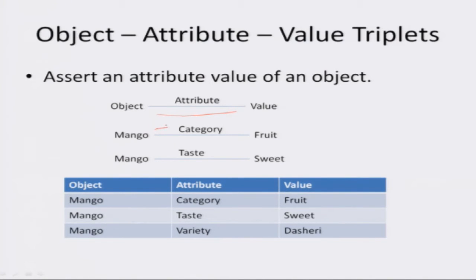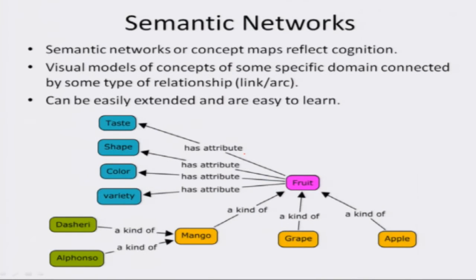If I wish to say that the taste of a mango is sweet, I may write it as mango has attribute taste that has value sweet — so mango tastes sweet. This can also be represented in tabular form. Semantic networks or concept maps reflect cognition; they model knowledge in the same way as human beings visualize it.